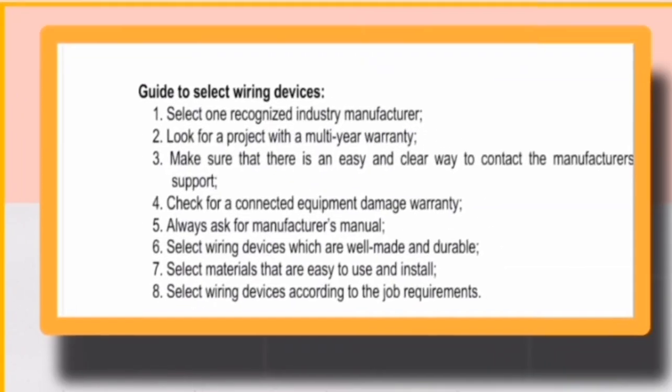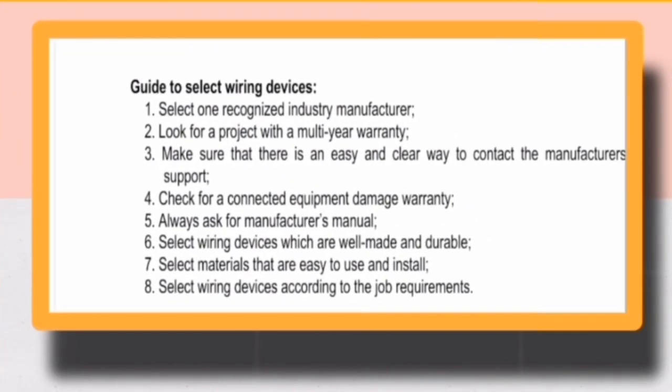Mga bagay na dapat sundin sa pagpili o pagbili ng wiring devices. Una, piliin ang kilalang company o manufacturer ng wiring devices, katulad ng Molex manufacturer. Pangalawa, look for a product with a multi-year warranty. Number three, make sure there is an easy and clear way to contact the manufacturer's support. Four, check a connected equipment damage warranty. Five, always ask for the manufacturer's manual. Six, select wiring devices which are well-made and durable. Seven, select materials that are easy to use and install. And number eight, select wiring devices according to the job requirements.